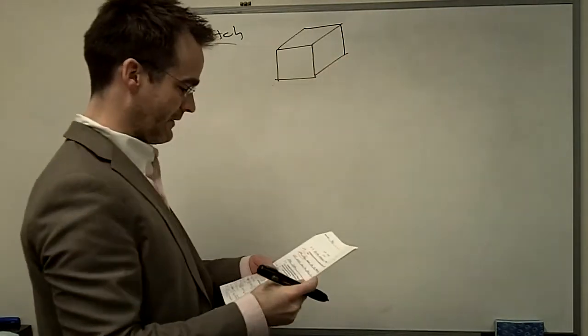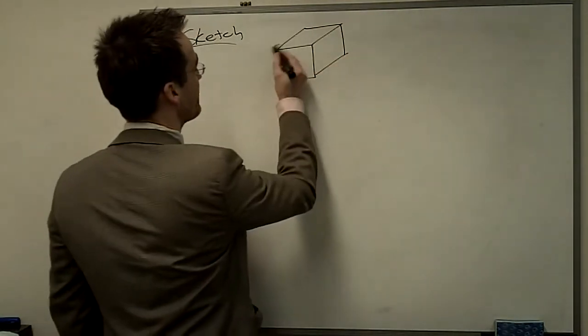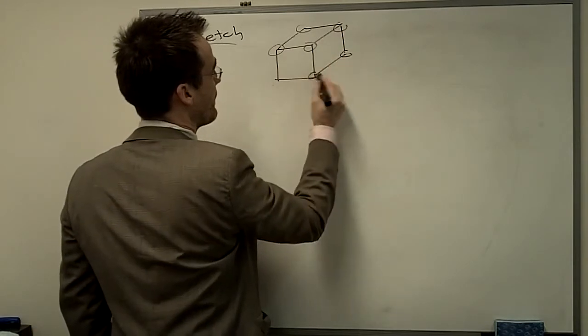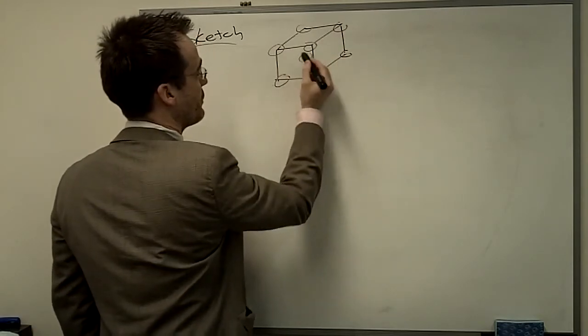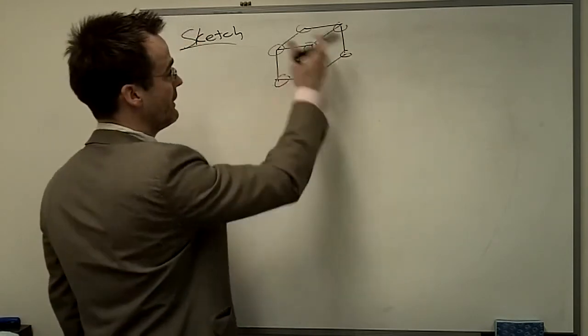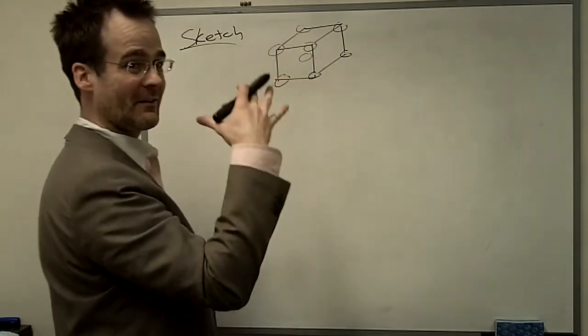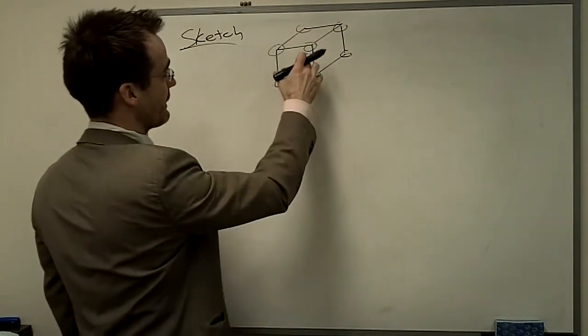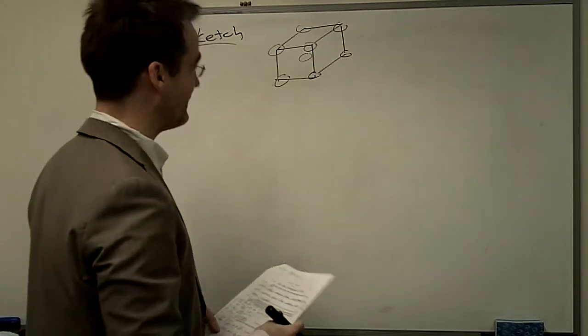All right, it tells us that it's BCC. So really quickly, let's just place our atoms, and there's one right in the very center of that cube. 8 on the corners, 1/8 is actually inside the cube, and there's one completely in the center. So that's our BCC.